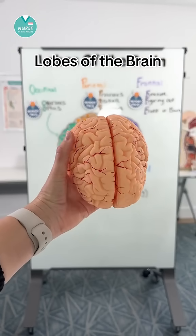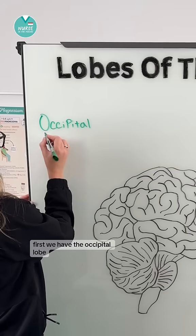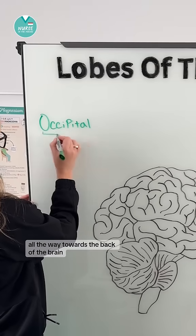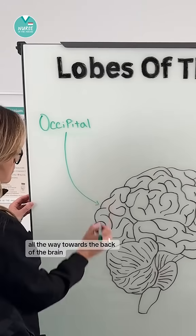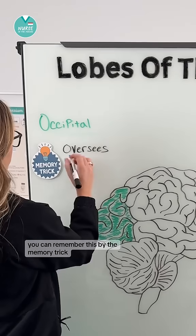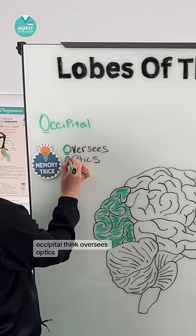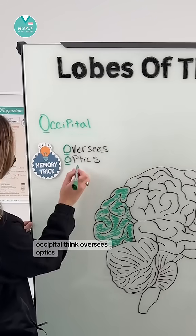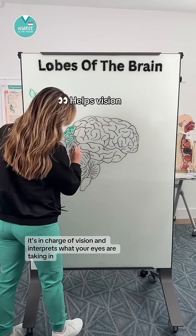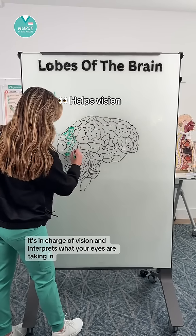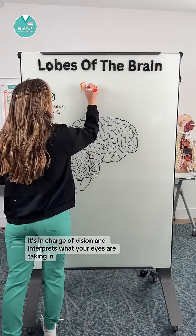Let's talk about lobes of the brain. First, we have the occipital lobe, all the way towards the back of the brain. You can remember this by the memory trick: occipital — think 'oversees optics.' This lobe helps you see. It's in charge of vision and interprets what your eyes are taking in.